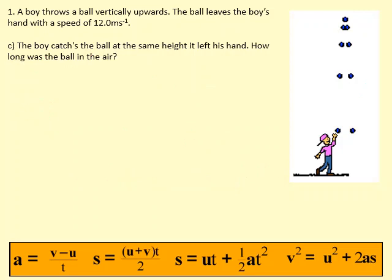Part C of the same question. The boy catches the ball at the same height it left his hand. How long was the ball in the air? We're going to set the suvats up again. The displacement now, so if it's left his hand at this point and it's just about to catch it, it's back at the same point again. So the displacement is actually 0 meters.